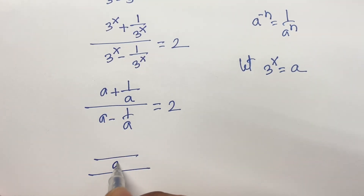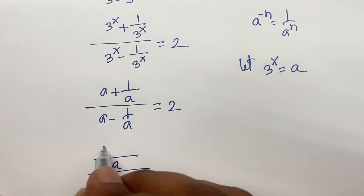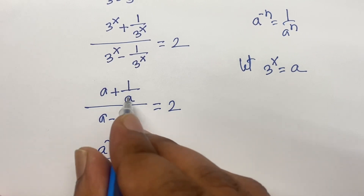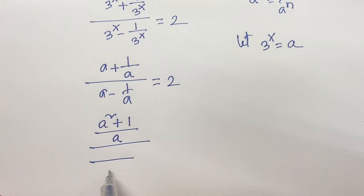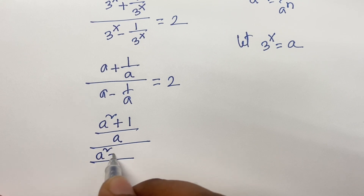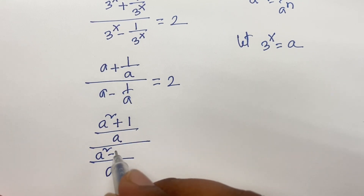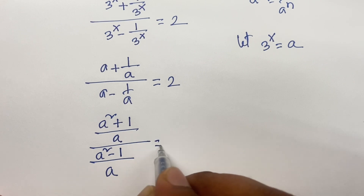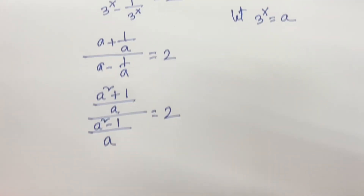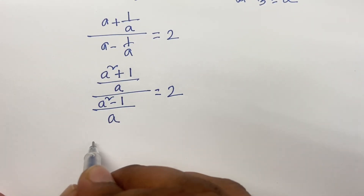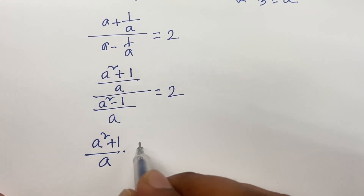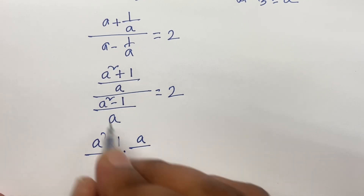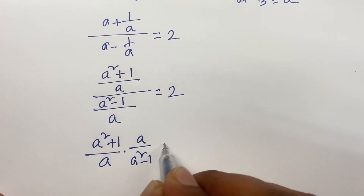Multiplying numerator and denominator by a: a times a equals a squared, plus a divided by a equals 1; and in the denominator a times a equals a squared, minus a divided by a equals 1. So we get a squared plus 1, over a squared minus 1, equals 2.